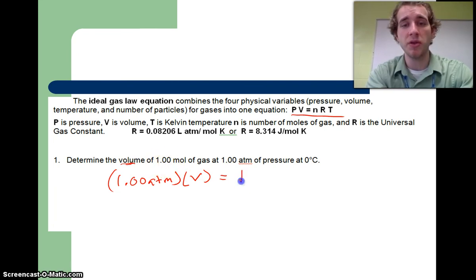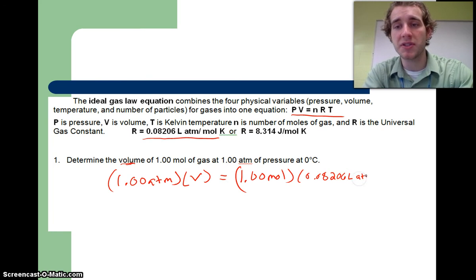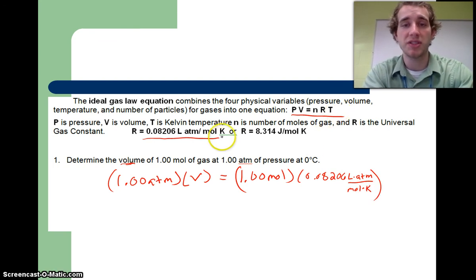That's going to equal the number of moles, which they tell us is 1.00 moles, times this R value. We're gonna use this first R, it's gonna match all of our units naturally: 0.08206 liters·atmosphere over mole·Kelvin. We're gonna take that R times the temperature.